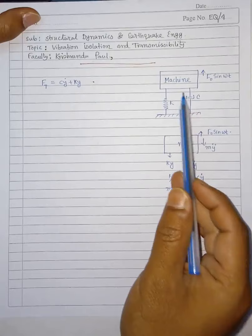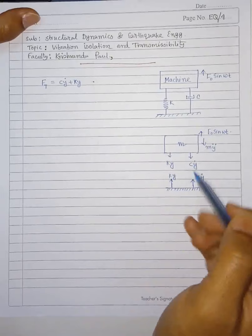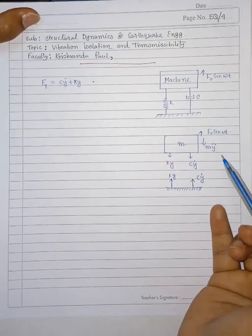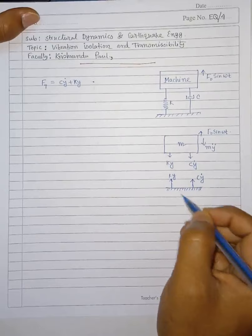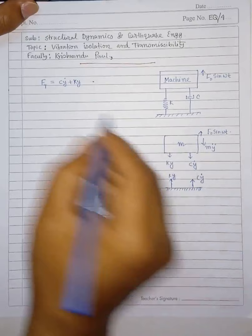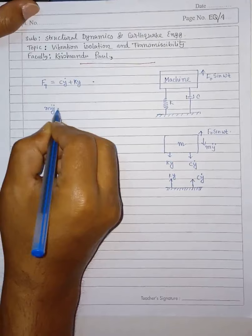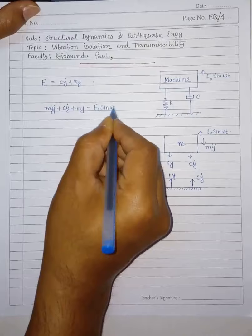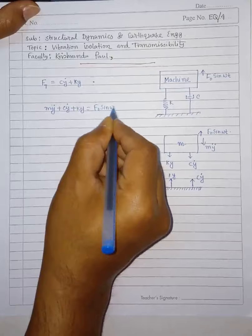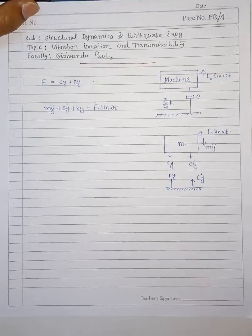The force on the support is ft = c*y-dot + k*y. Our concern here is about the foundation. Writing the equation of dynamic equilibrium of the machine: m*y-double-dot + c*y-dot + k*y = f-naught sine omega-t, where total downward force equals total upward force. We have solved this equation before in forced vibration.